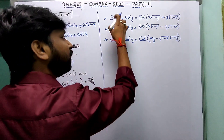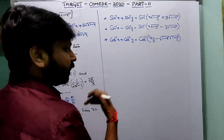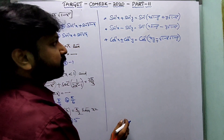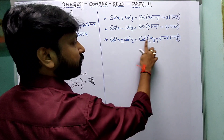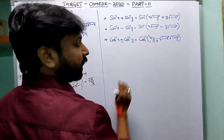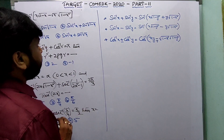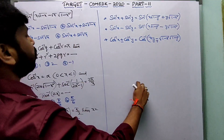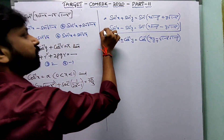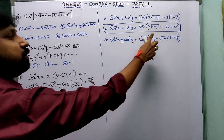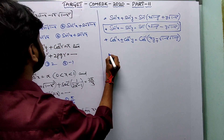Whenever the question is given in terms of sine and cosine, you don't need to convert to tan — directly apply the shortcut formula. Here, a minus sign means we use the subtraction formula. Observing the given expression, it looks like formation number two because there's a minus sign in between.